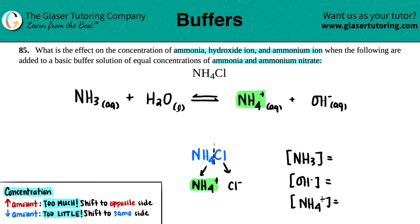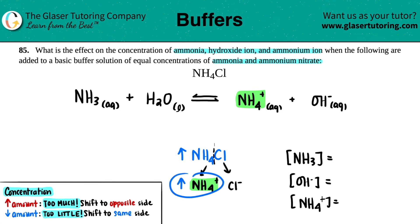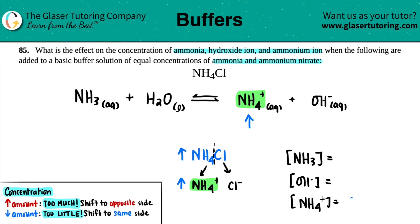If we say that we added the NH4Cl, that means that increased — I increased the amount of NH4+. So I've actually answered one of the questions: my ammonium ion is going to increase. Now I just have to figure out what's going on with the other two.